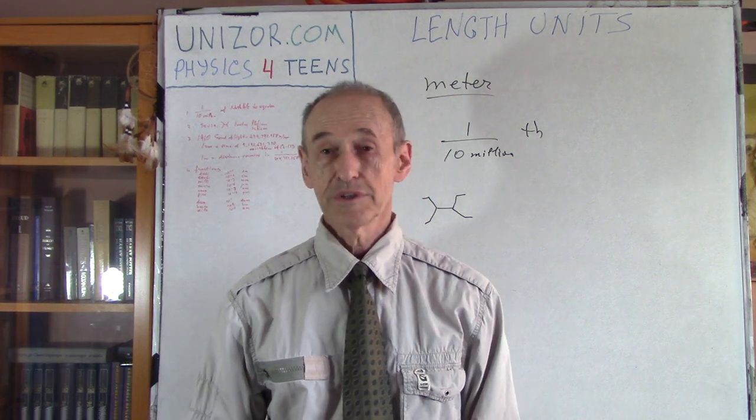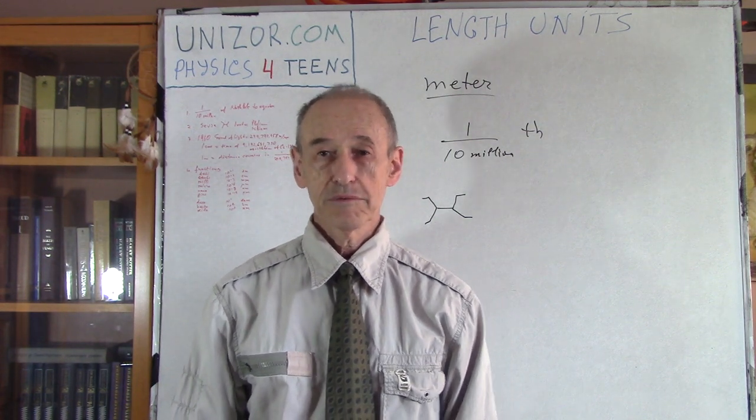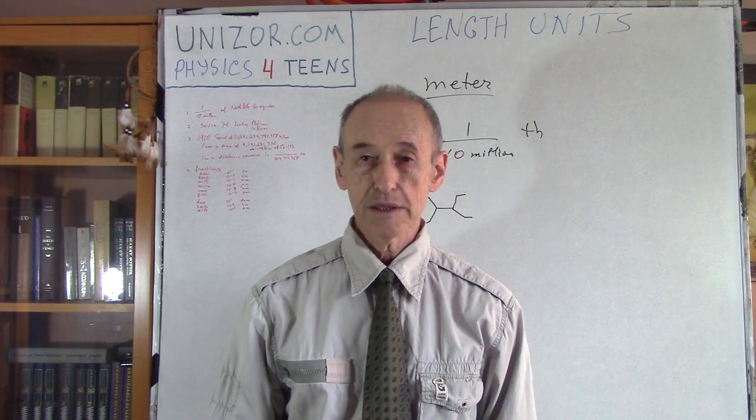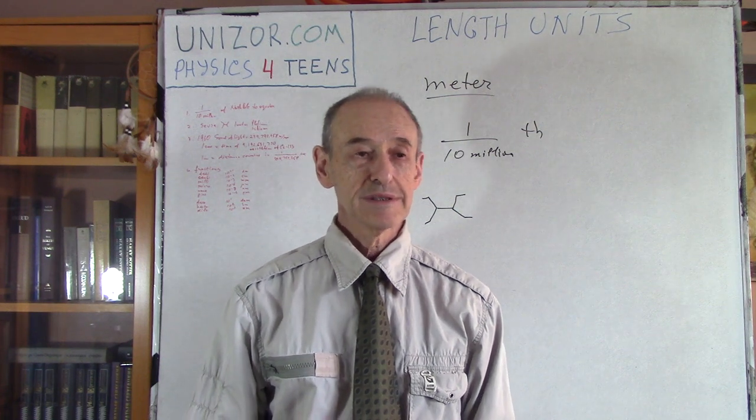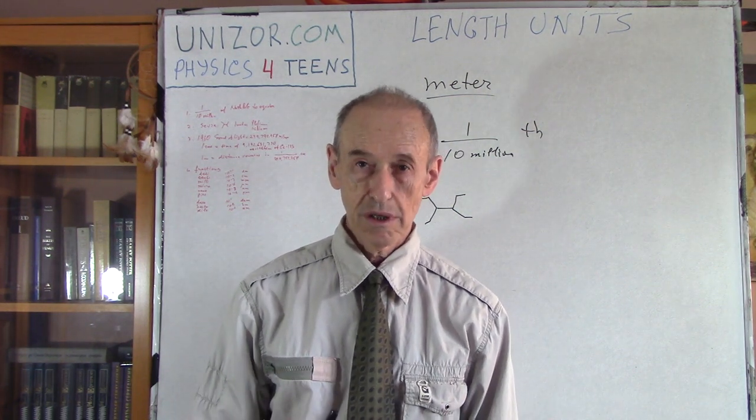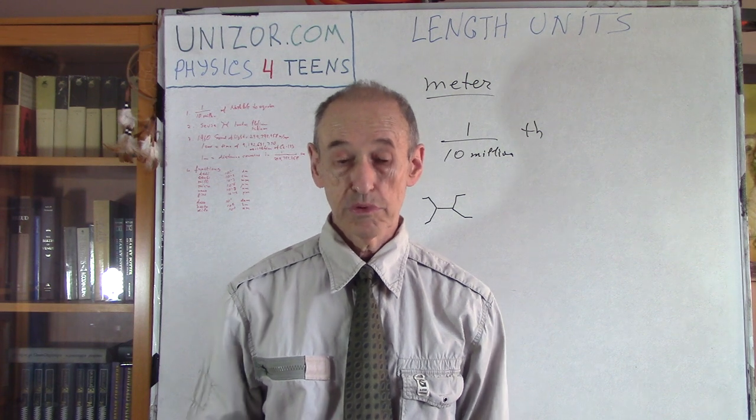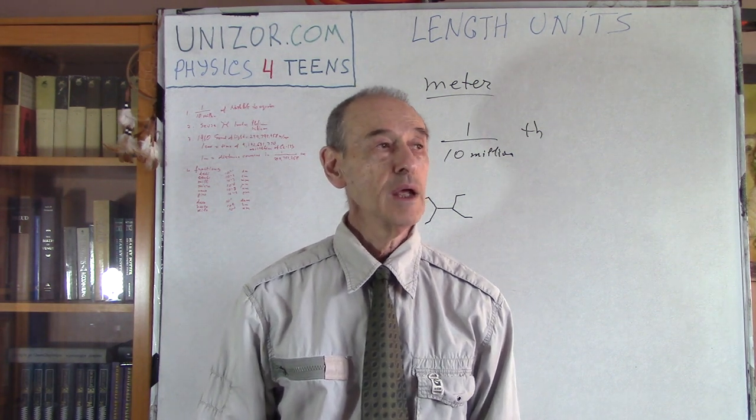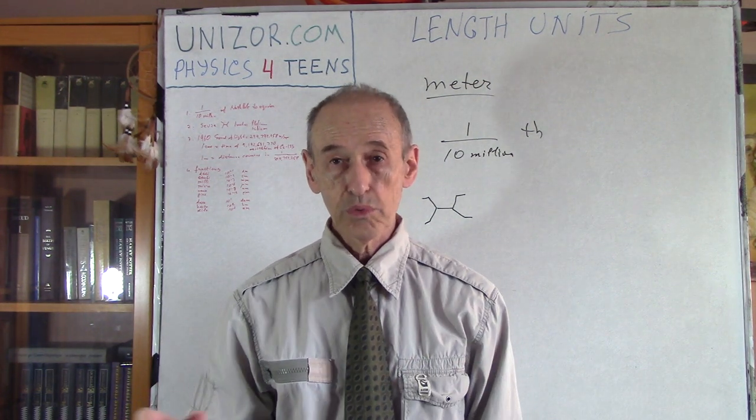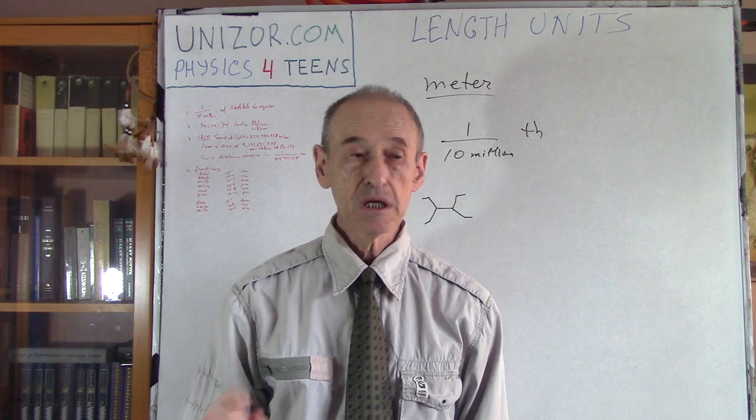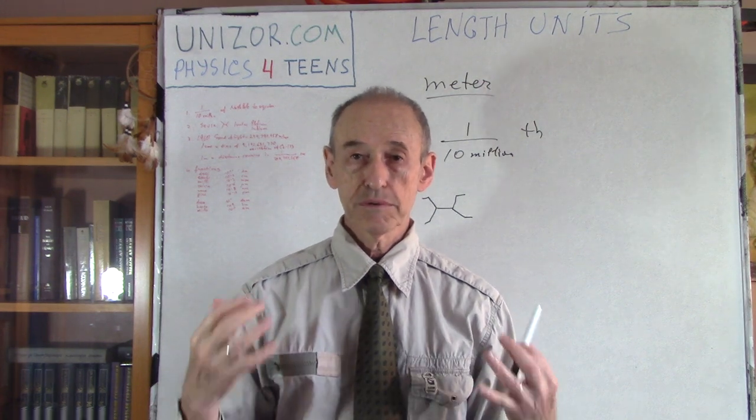About a hundred years later, people realized that no matter how precise we have made this particular meter made of platinum and iridium, it is still changing with time, and it is not good for definition of what actual meter is, considering the precision which we really have to make right now. They decided, and that is the general direction of all the definitions of all the units in SI. They decided to hook it with some kind of a natural, physical constant.